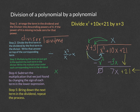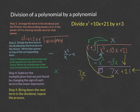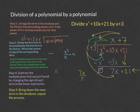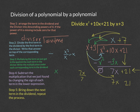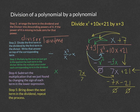We repeat the process: how many times does x go into 7x? That's 7x over x, which is 7. Take that 7 and multiply each term in the divisor: 7 times x is 7x, and 7 times 3 is 21. Then subtract by changing signs: 7x minus 7x is zero, and 21 minus 21 is zero. Nothing remains, so our quotient — our answer — is x plus 7.